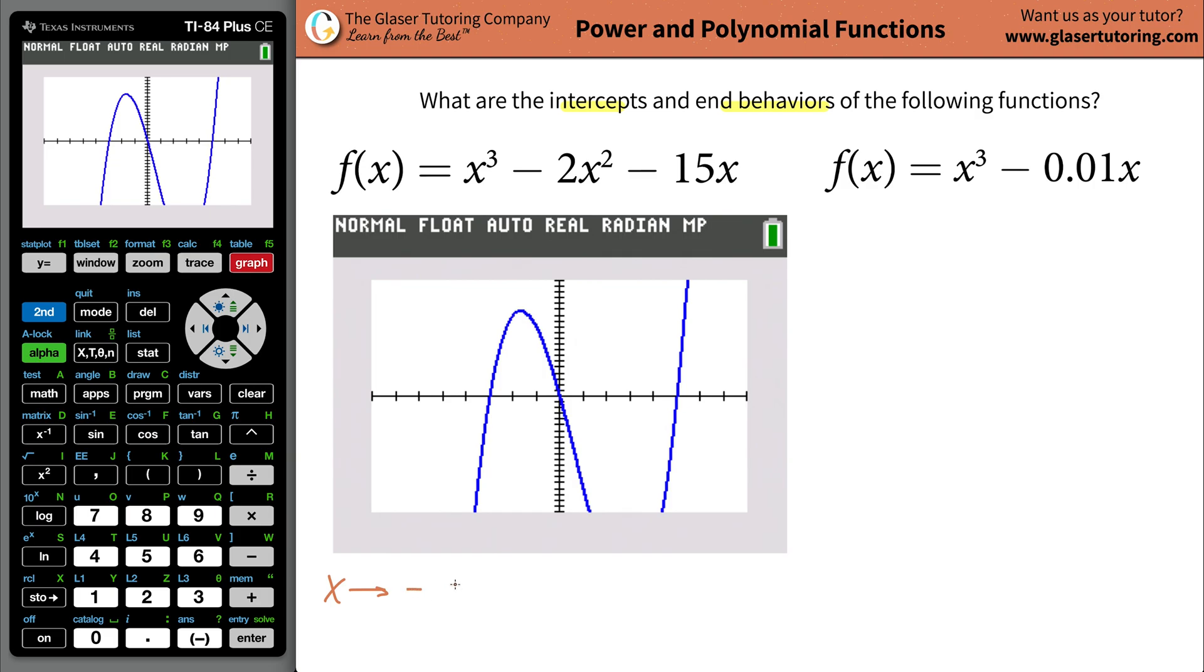As x goes on and on and on to negative infinity, the y value is going to continue to go on and on and on to negative infinity as well. This graph is going to trail on down there forever. So that's the leftmost end behavior.